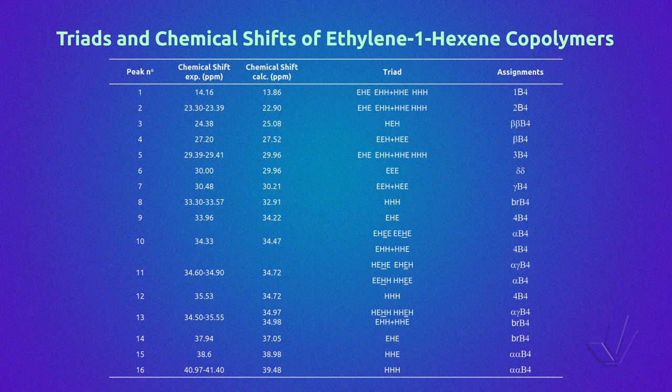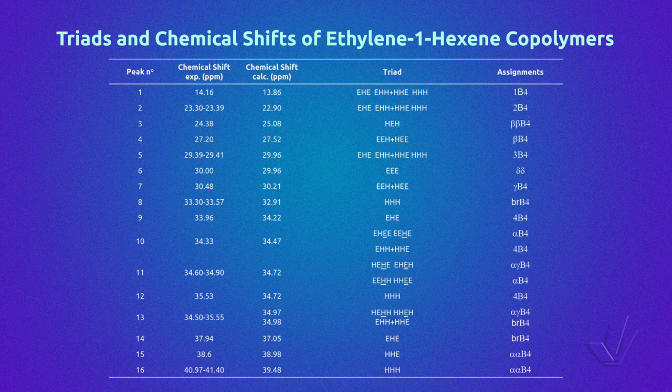In the third column, there are the calculated chemical shifts in ppm, obtained using the equation of Lindemann and Adams, as we have seen in part 7 of this course. In the fourth column, we have the triad or tetrad sequences for the ethylene-1-hexene copolymer corresponding to the chemical shift. And finally, the carbon atom of the triad related to each chemical shift.